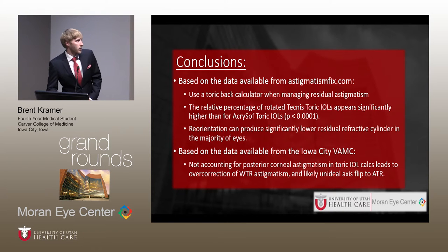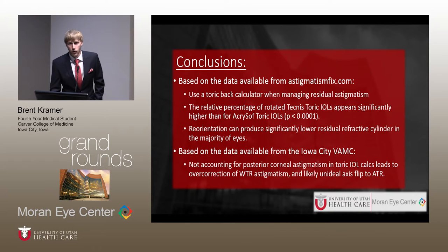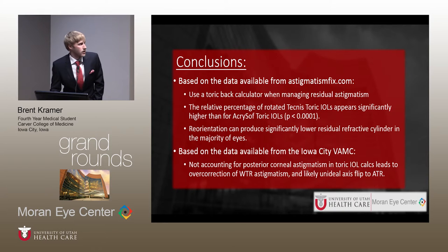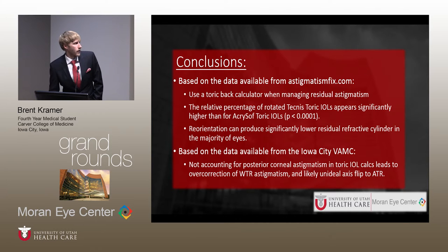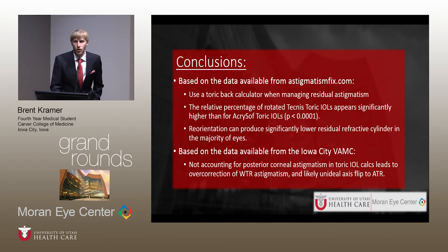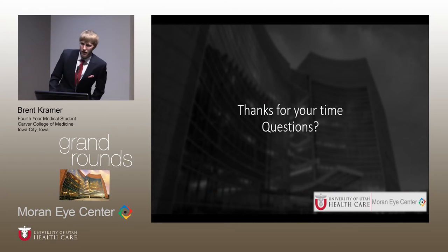In conclusion, the key take-home points are: using toric back calculators is important when managing residual astigmatism; the Technis IOL (an AMO lens) was found to be potentially more rotationally unstable than the Acrosoft lens; reorientation can significantly reduce residual astigmatism; and from the Iowa City VA study, not considering posterior corneal astigmatism can lead to overcorrection of with-the-rule astigmatism. Thank you — any questions?